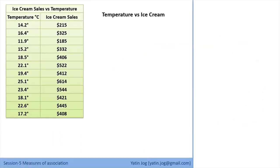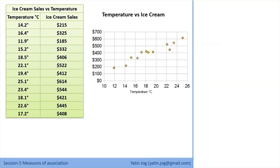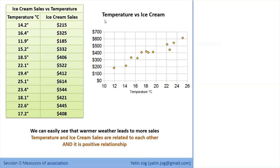If you look at this table with two variables — temperature in degrees Celsius and ice cream sales in dollars — when the temperature is 14, ice cream sales are around $200; when temperature is 15, sales are around $300; when it is 16, sales are $300 plus. So as temperature increases, ice cream sales also increase. From the scatter diagram we can see an upward trend — a positive relationship — meaning warmer weather leads to more sales.